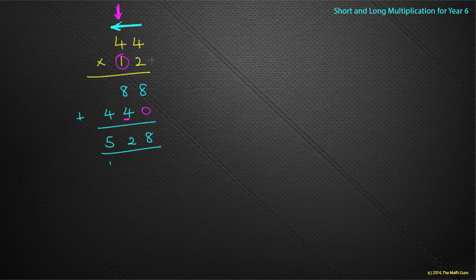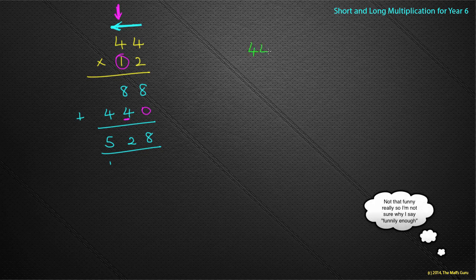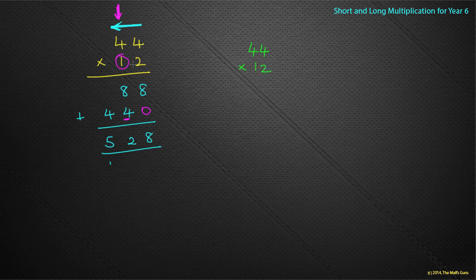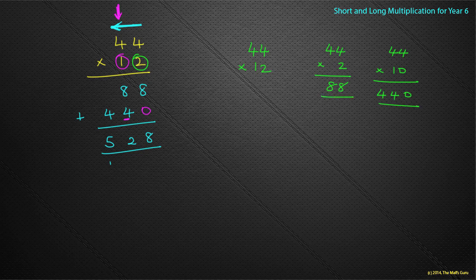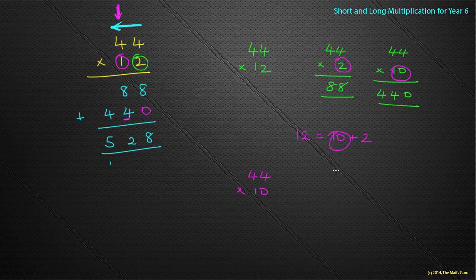But why does this work? Well, you already know how to do this — you've been using it in a different video. With 44 times 12: by doing the 2 first, you're really doing 44 times 2, which gives 88. By then doing the 1, you're really doing 44 times 10. And why 2 and 10? Because 12 can be split into 10 plus 2. So you're doing 44 times 10 added to 44 times 2, and when you add those together you get 528.